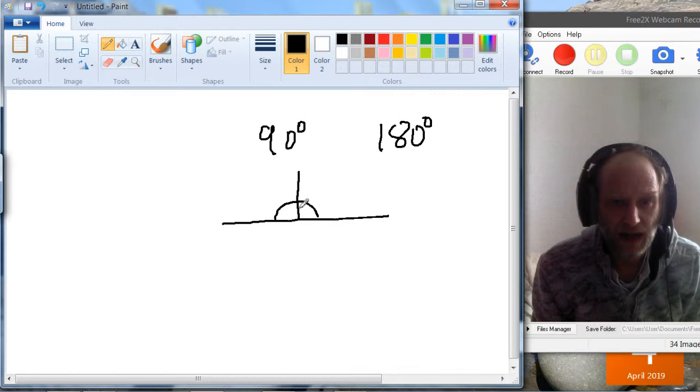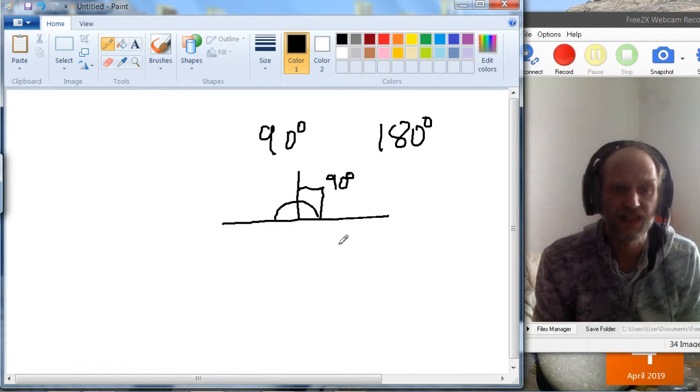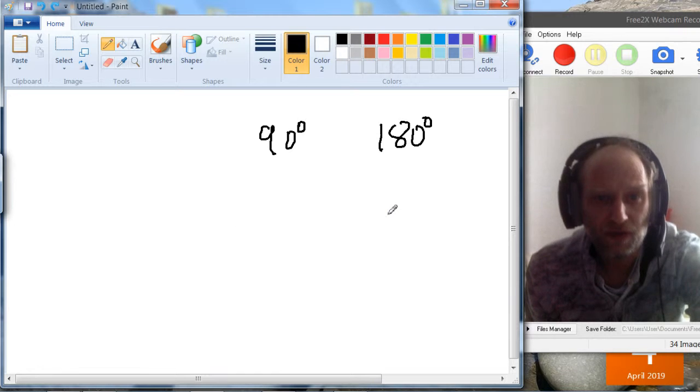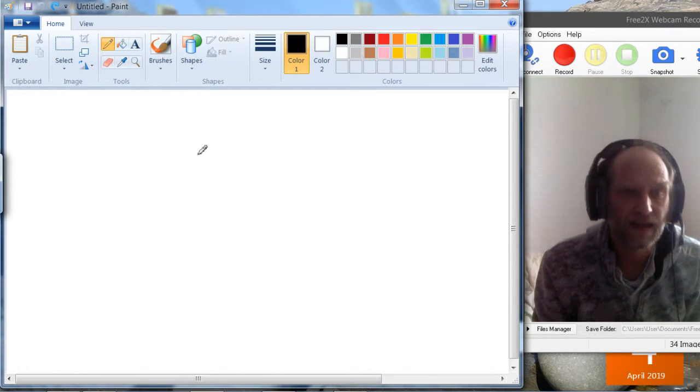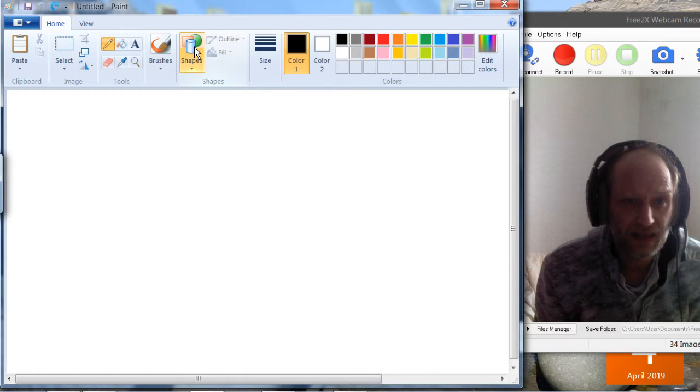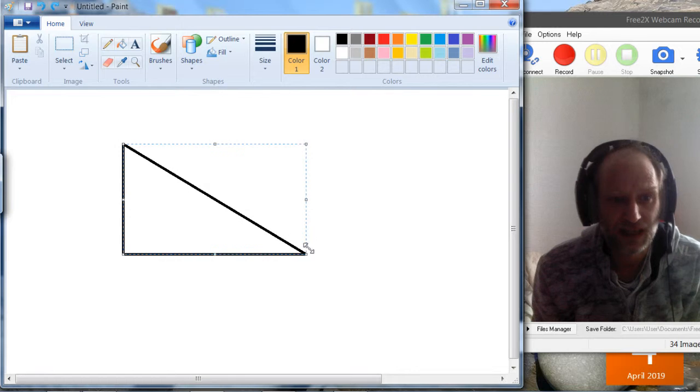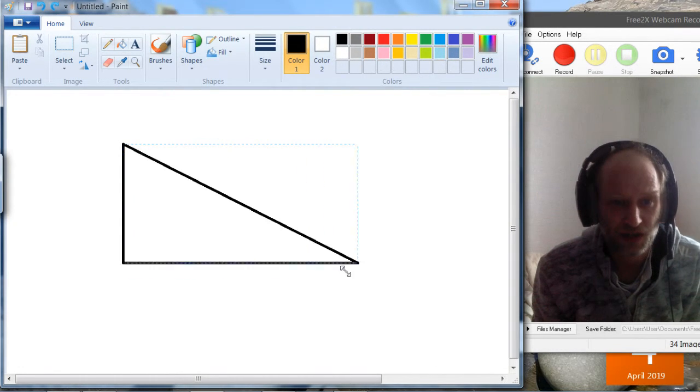And that angle there, which actually we usually use a square to represent 90 degrees, will be 90 degrees. And if we have a triangle with 90 degrees in it, and in fact this actually, if you notice, the angle here is always 90 degrees, so this is actually a right angle triangle.